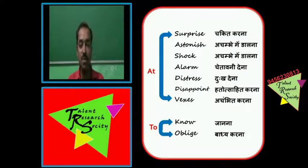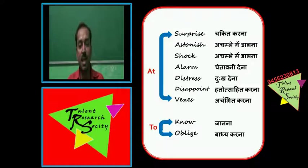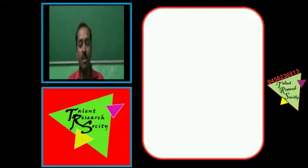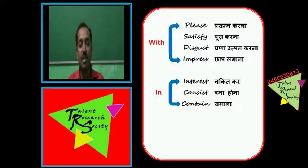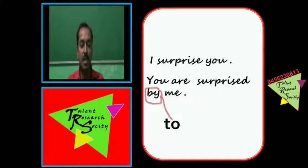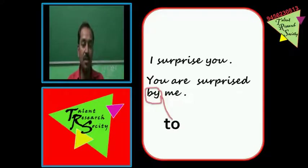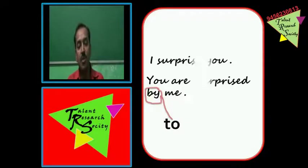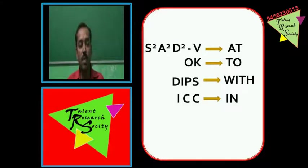Kuch verbs hain jinke saath 'by' nahi aata — passive mein 'by' ki jagah 'at', 'to', 'in', ya 'with' aata hai. Ye verbs hain: surprise, astonish, shock, alarm, distress, disappoint, vex — inke saath 'at' aata hai. Oblige aur known ke saath 'to' aata hai. Example: 'I surprise you' ka passive 'You are surprised at me' hoga, 'by me' nahi.